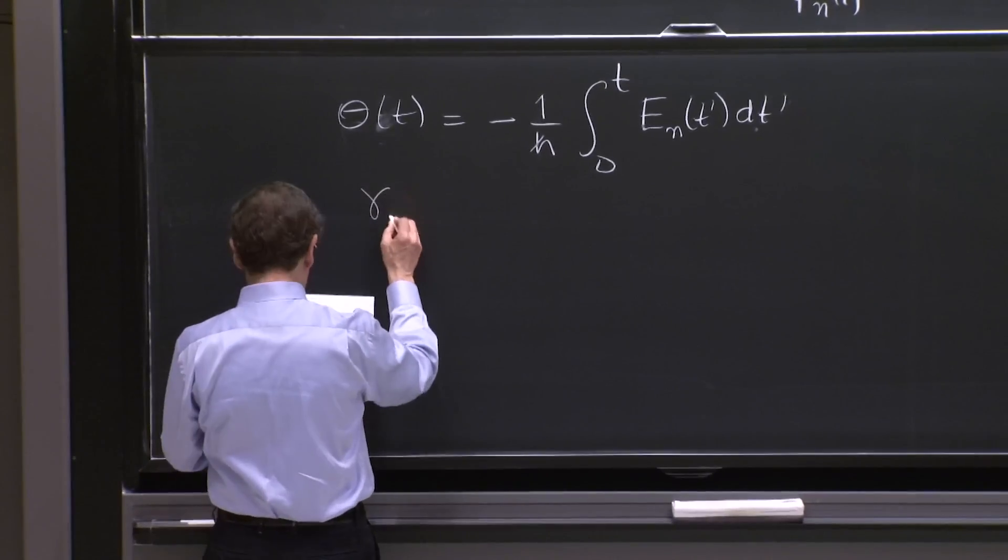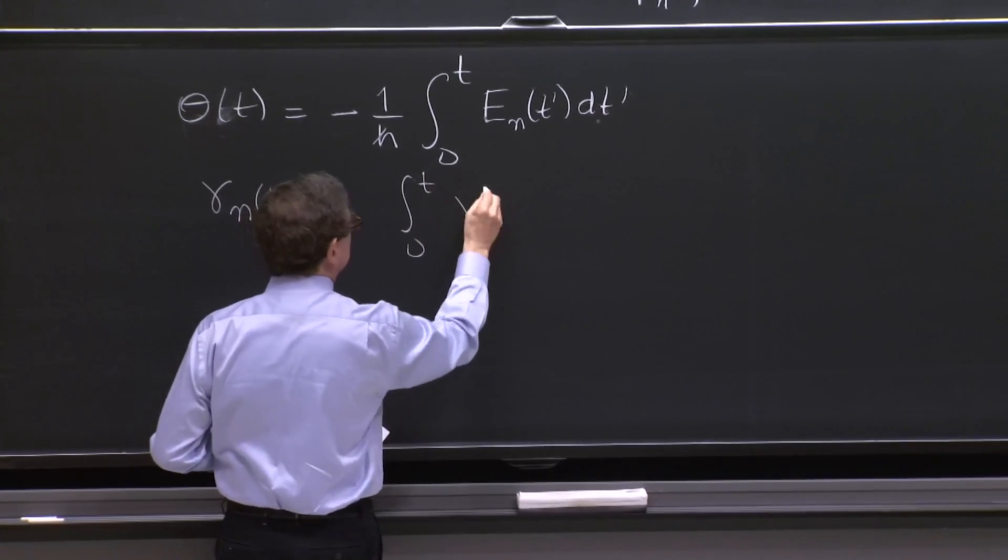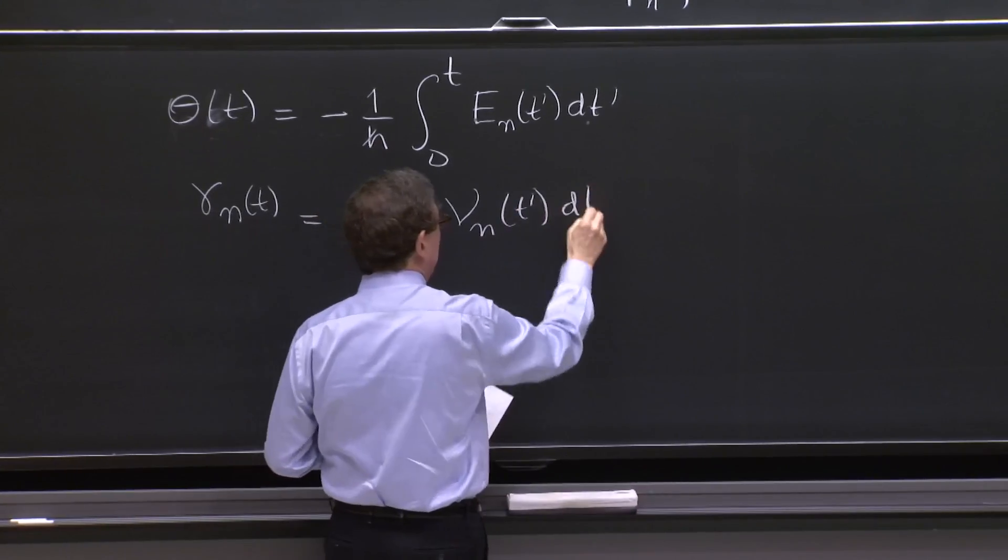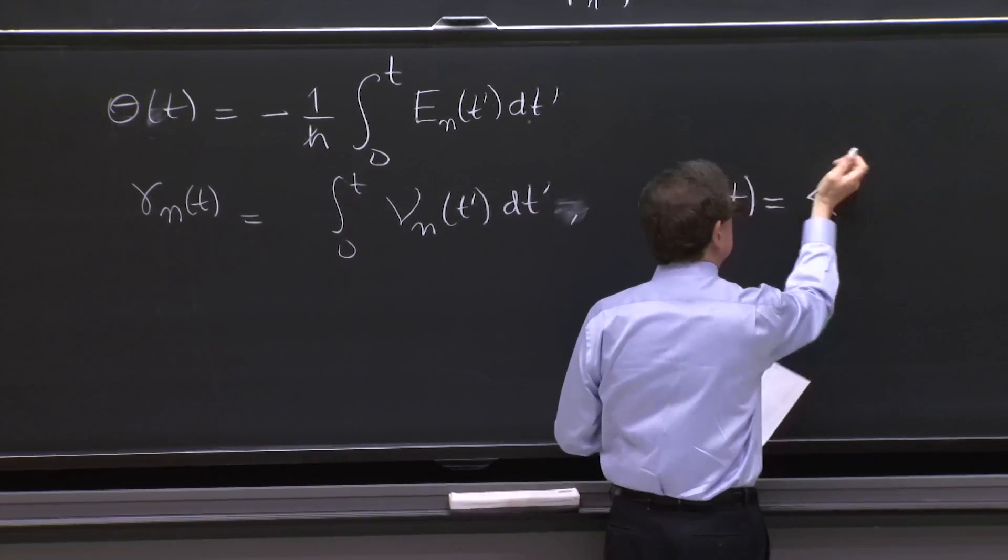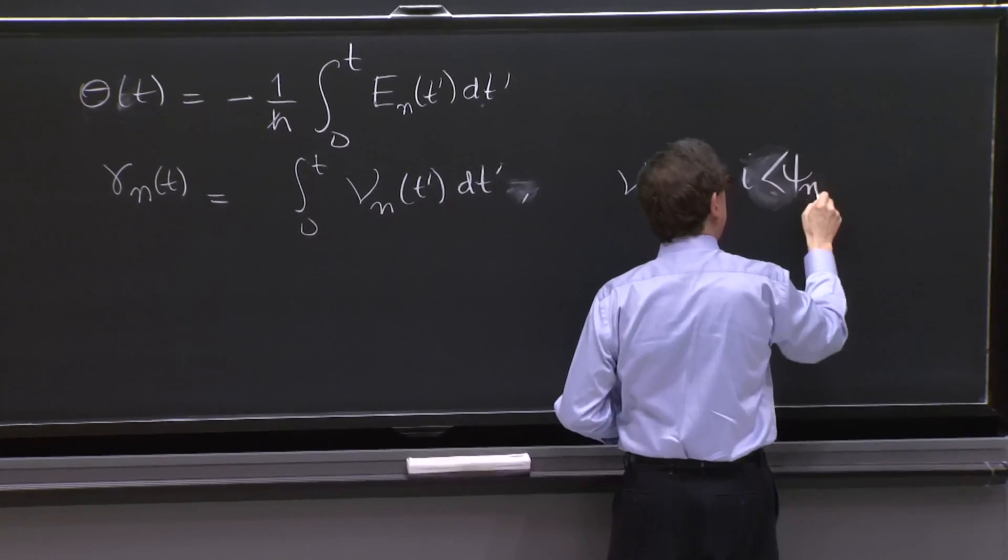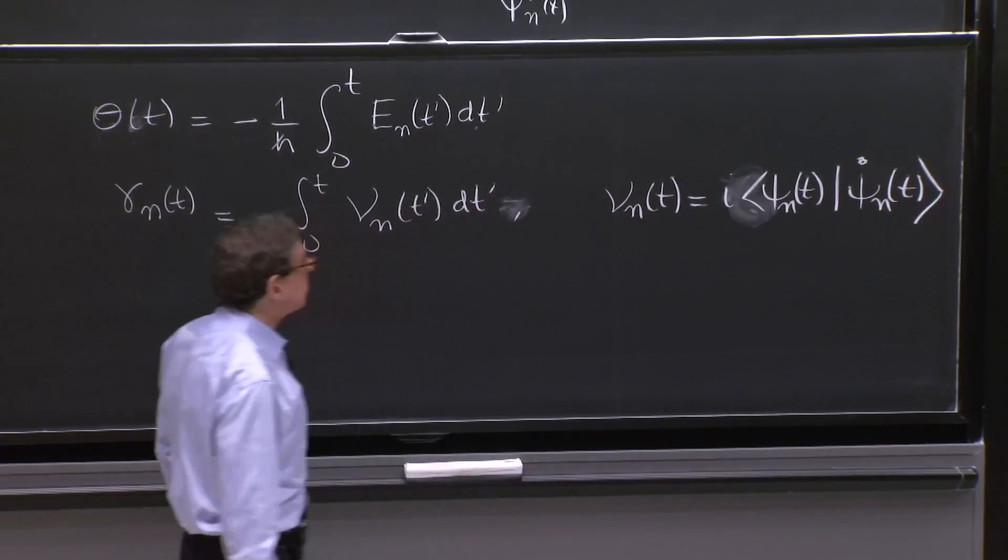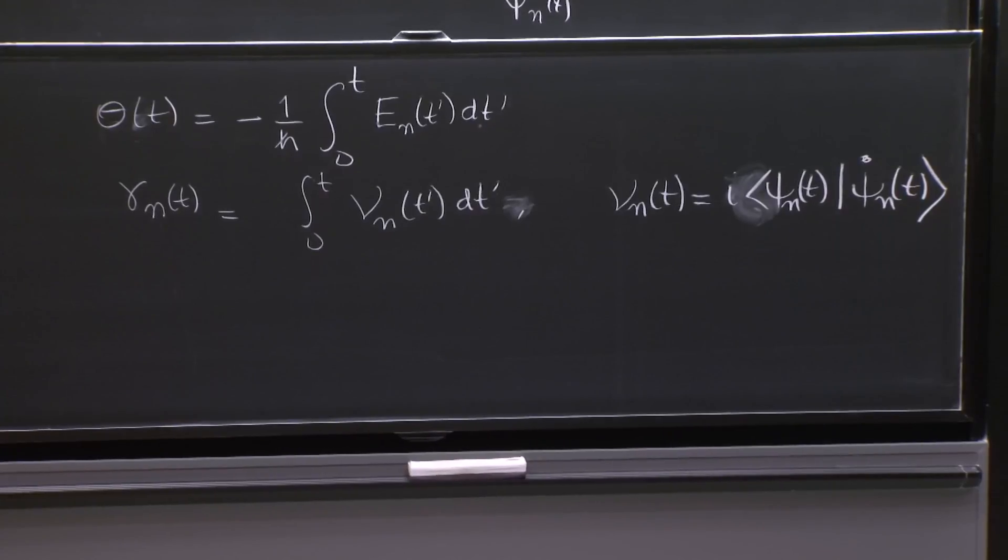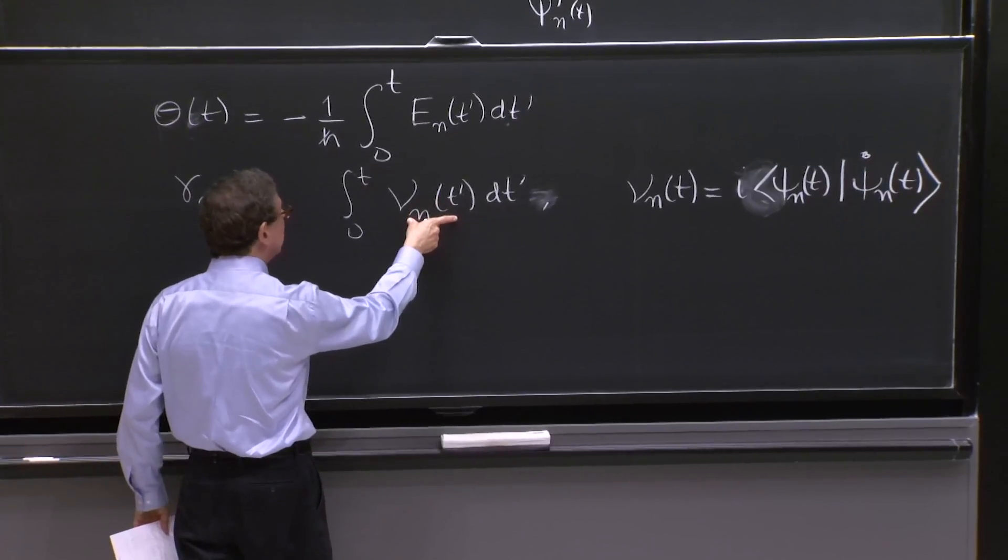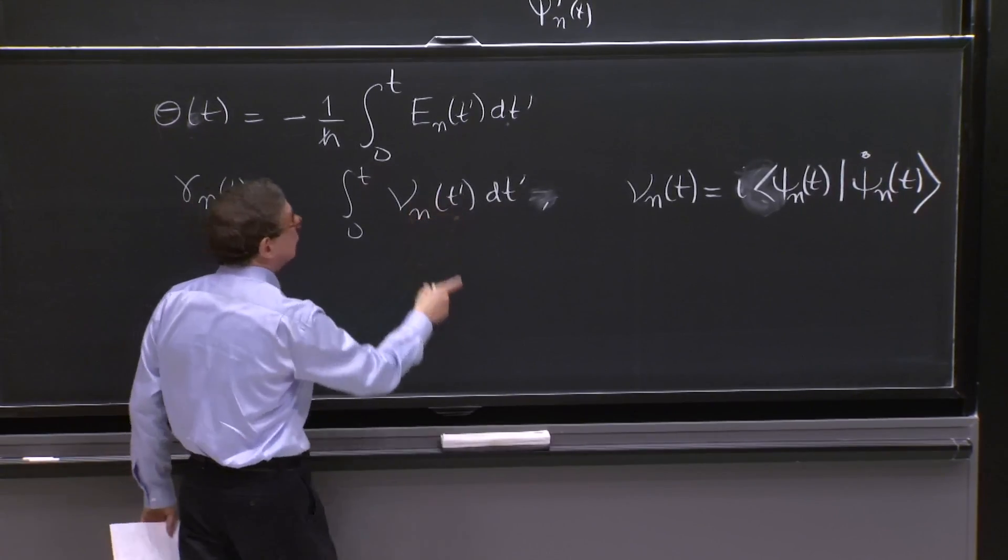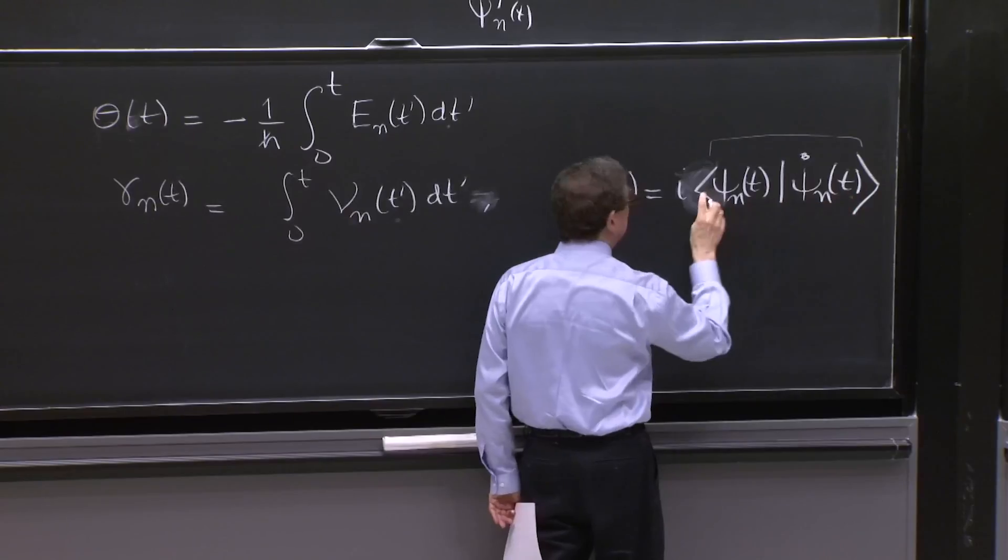Then it comes the gamma n of t, which is an integral from 0 to t of some nu n of t prime dt prime. And this nu n of t is i psi n of t psi n dot of t. I think I have it right. So the second part of the phase is the integral of this nu function. And this nu function is real because this part we showed before is imaginary. Well, for with an i, this is real.